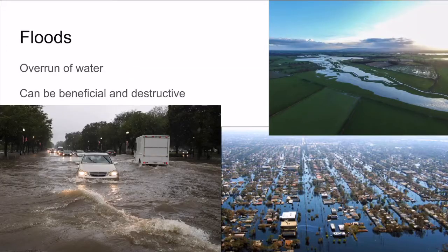Floods are a natural disaster caused on rivers. It is an overflow of water that submerges the land around it. This may happen due to water overflowing some natural boundary, or it may be due to water accumulation with no place to go. For example, a lot of sudden rain or natural disasters like hurricanes can cause flooding to happen.